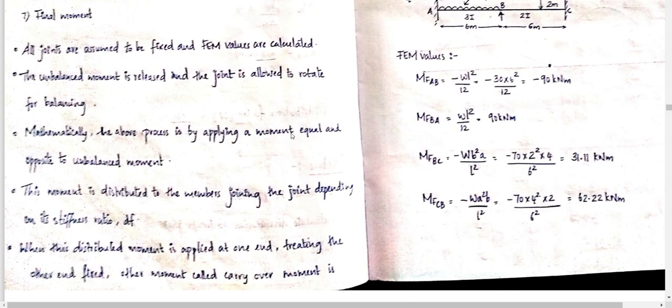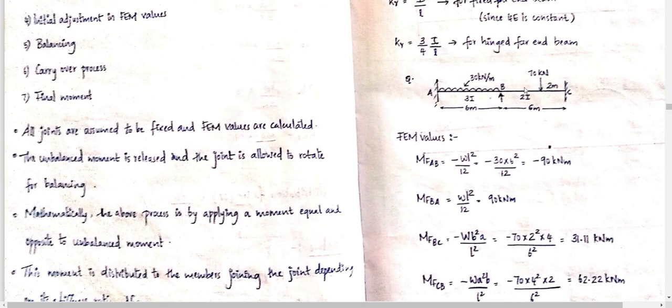We identify the joints: this is the intermediate joint at B, and the fixed ends are at A and C.